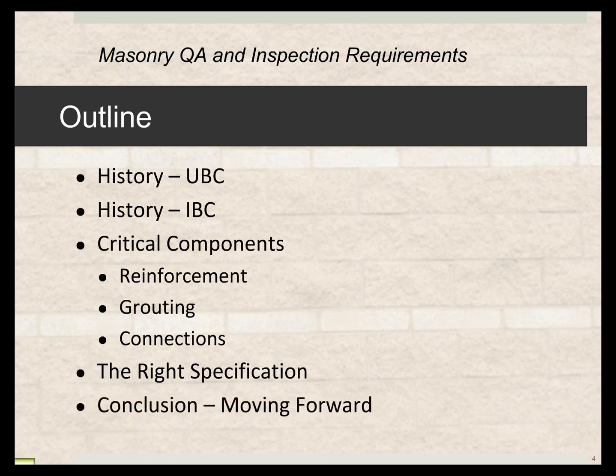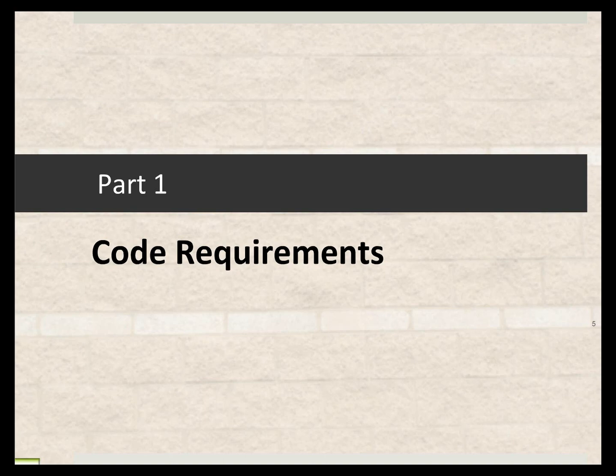And then the conclusion: what to look for moving forward — where can we go and how can we make this whole system of inspection, and in this particular presentation, masonry inspection, better? It will be better if we can convey a clear message when putting together the quality assurance program to make sure that the quality control program — that is, the implementation of the QA program — is properly done.